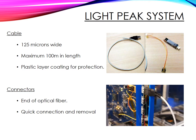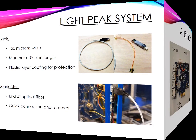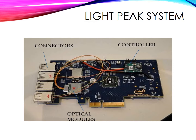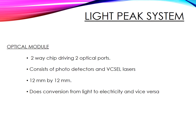This is a Light Peak chip which consists of four connectors along with optical modules and a controller, which is the heart of the Light Peak system. The optical module of a Light Peak system has four optical fibers, two for each direction. It consists of two VCSEL lasers — Vertical Cavity Surface Emitting Lasers — which are semiconductor-based laser diodes that emit a highly efficient optical beam vertically from the top surface. The optical module also has two photodetectors and an optical IC. All these fit into a 12 x 12 mm structure. The optical module is basically responsible for light to electricity conversion and vice versa.